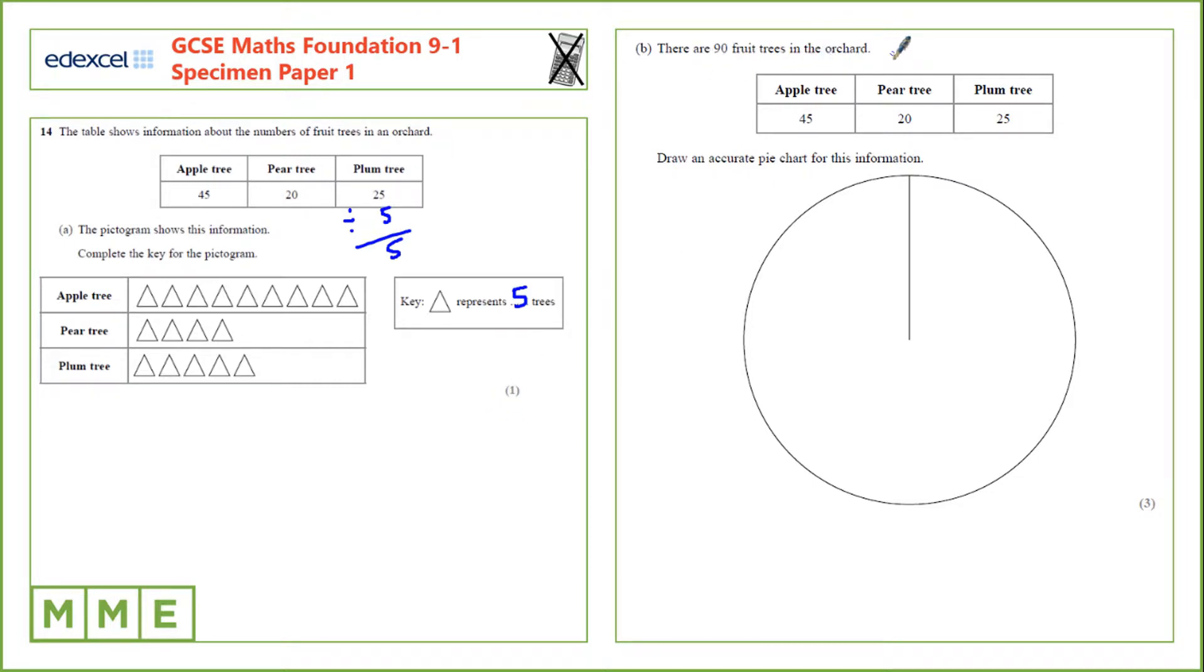There are 90 fruit trees in the orchard. Draw an accurate pie chart for this information. The first thing we need to know is how many trees are equivalent to one degree of the pie chart. If we take 360 degrees and divide that by 90 trees,